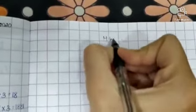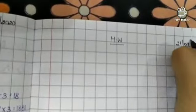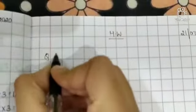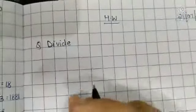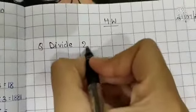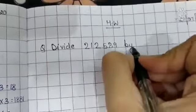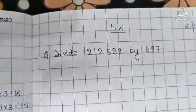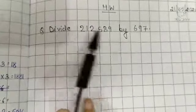Now come to next page, write down homework and note down one question for your homework. Write down the question: divide 212589 by 697. This is your homework. You have to do this question in your notebook.